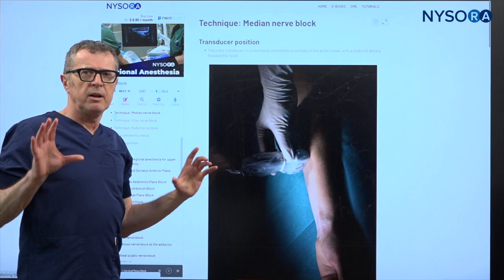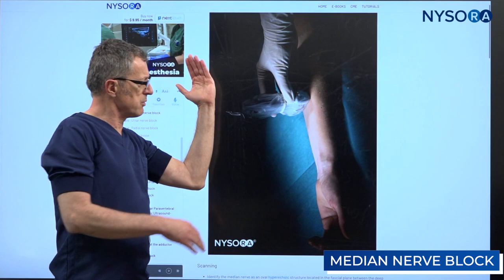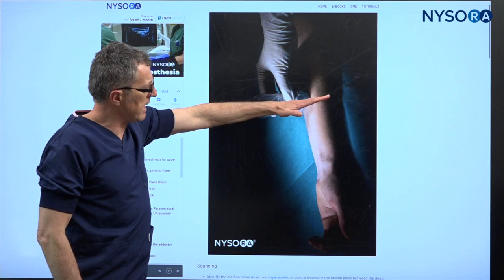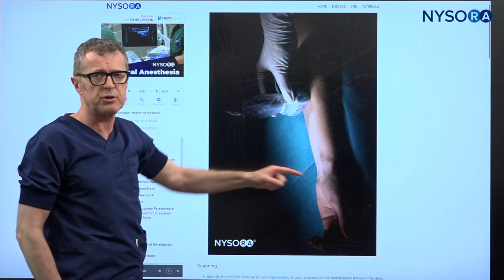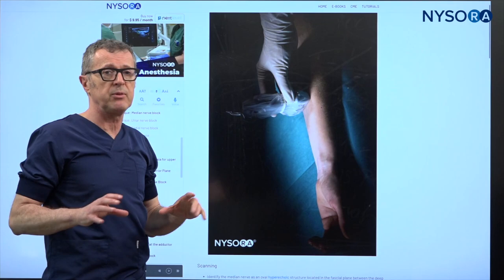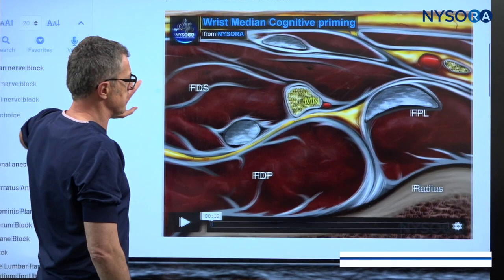If you know this technique, you really can shine in the hand surgery room any given day. Let's start with the technique of the median nerve block. This is the probe position, positioned between the wrist crease and the elbow crease — that's where we start the scanning. The block can occur at any given level between these two structures, but the more distal you go, closer to the middle of the forearm, the better.